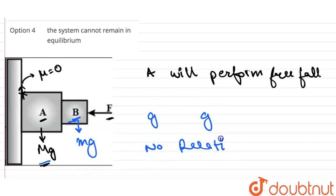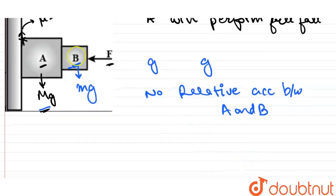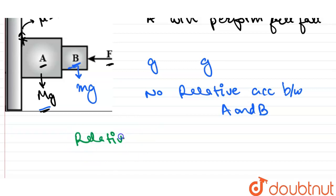Now because there is no relative acceleration between A and B, and their initial velocities are zero, we know there will be no relative motion. No relative motion.